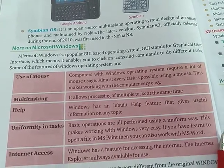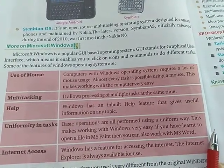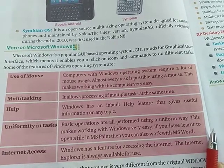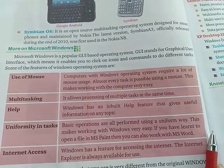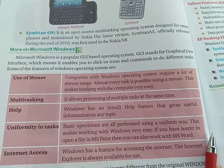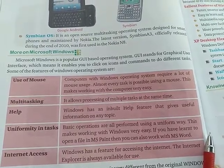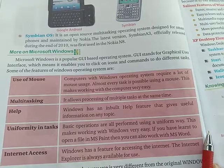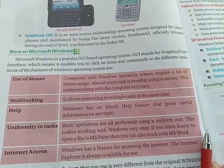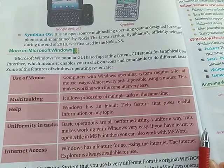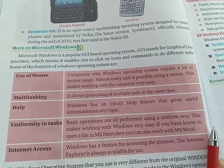Microsoft Windows is a popular GUI-based operating system. GUI stands for graphical user interface, which means it enables you to click on icons and commands to do different tasks. Some of the features of Windows operating systems are: